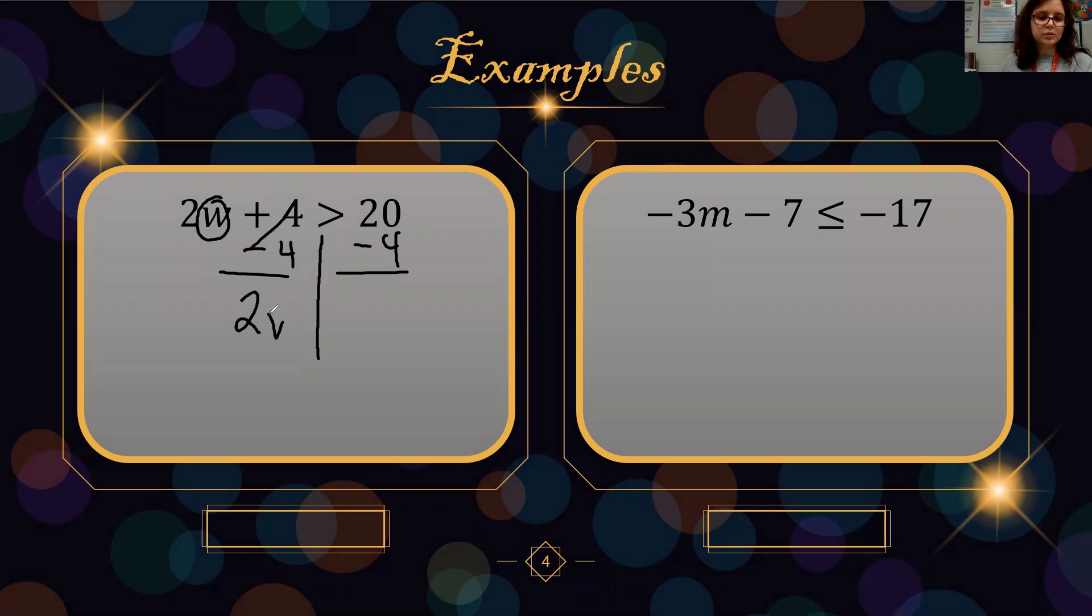So 2w. 20 minus 4 is 16. We undo multiplication with division. We have w on one side. 16 divided by 2 is 8. We did not divide by a negative, so our inequality symbol does not change.